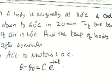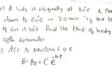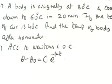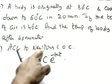Next question: A body is originally at 80°C and cools down to 60°C in 20 minutes. The air temperature is 40°C. Find the temperature of the body after 40 minutes. Same method — three cases.